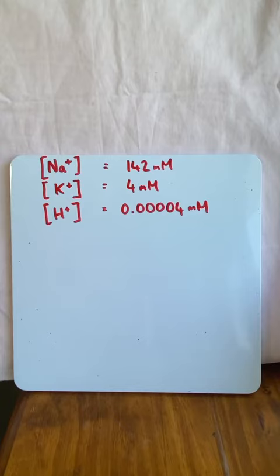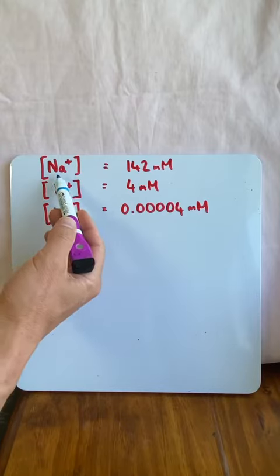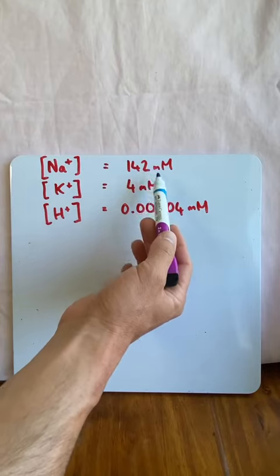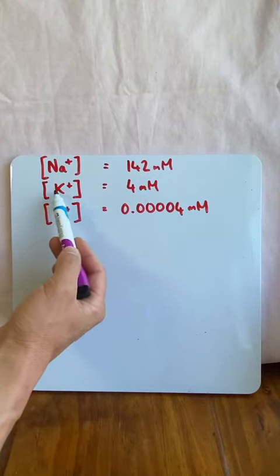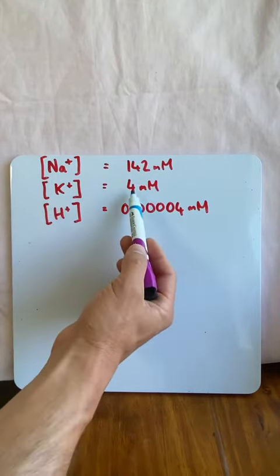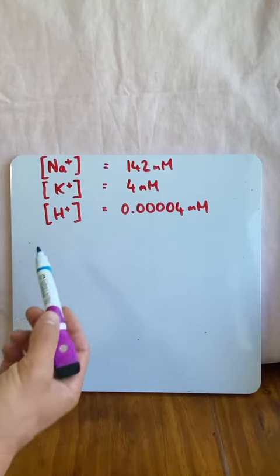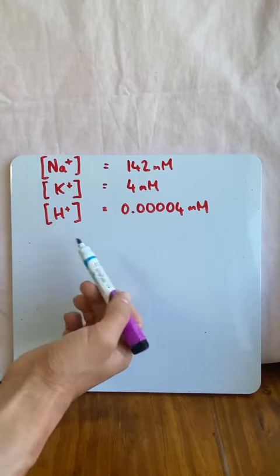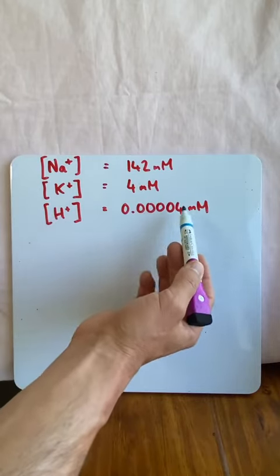Now if I were to take your blood and measure the concentration of sodium in your blood, it's going to be around about 142 millimoles. If I take the potassium and measure the concentration of that in your blood, around about 4 millimolar. And if I were to measure the hydrogen concentration, it's going to be 0.00004 millimolar.